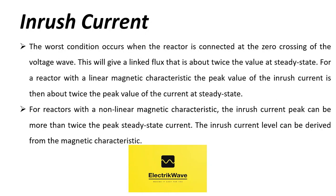The worst condition occurs when the reactor is connected at the zero crossing of the voltage wave. This will give a linked flux that is about twice the value at steady state. For a reactor with a linear magnetic characteristic, the peak value of the inrush current is then about twice the peak value of the current at steady state. For reactors with a non-linear magnetic characteristic, the inrush current peak can be more than twice the peak steady state current. The inrush current level can be derived from the magnetic characteristic.